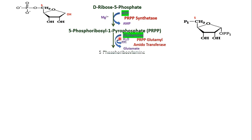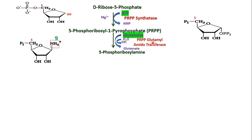In the next step, glutamine donates its amide nitrogen to PRPP, forming phosphoribosyl amine. The enzyme catalyzing this is PRPP glutamyl amidotransferase. Glutamine gives its amide group — so an amido transfer occurs. If you look at the diagram, the amino group is bound at the N9 position, which is N9 of the purine ring, forming phosphoribosyl amine.